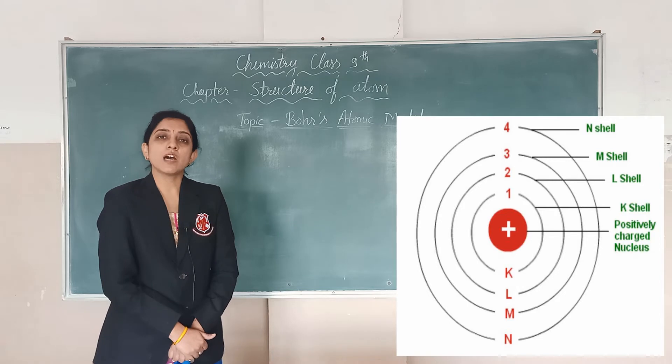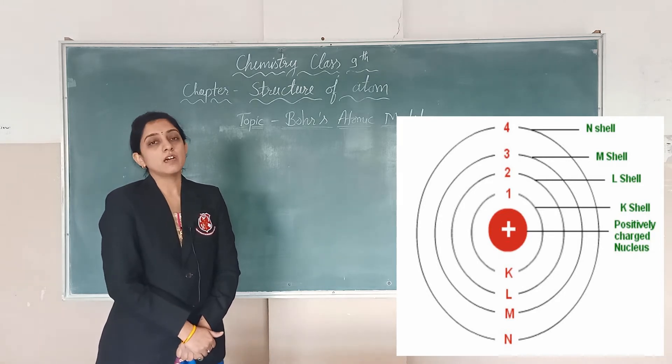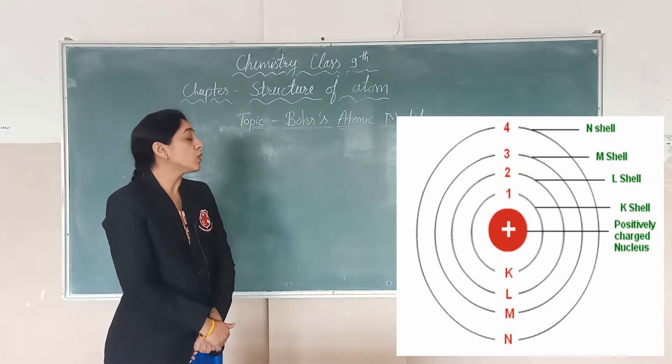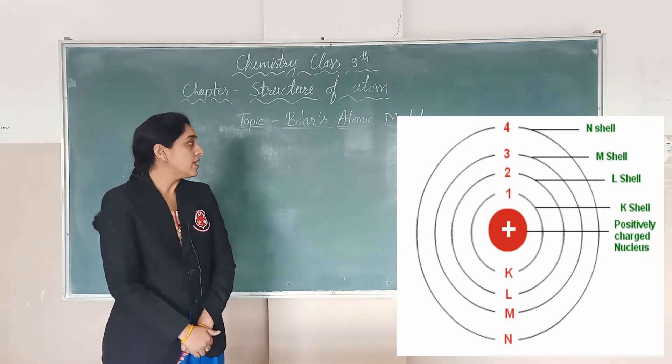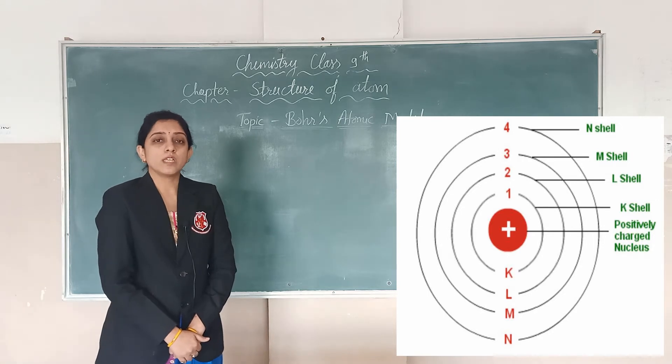Second, protons, which are positively charged. And third, neutrons, which are neutral. In which protons and neutrons are situated in the nucleus, but electrons are situated around the nucleus, they revolve around the nucleus.